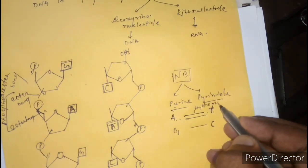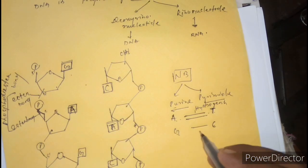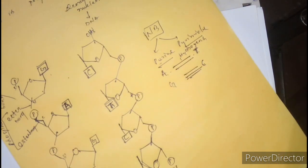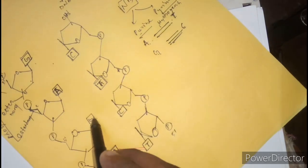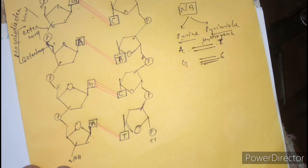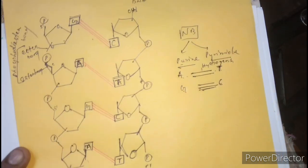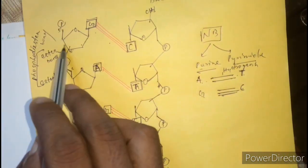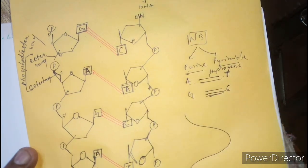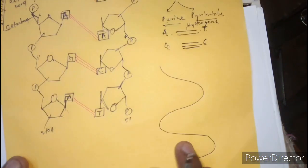Purine always pairs with pyrimidine: adenine always pairs with thymine, and guanine always pairs with cytosine. In between adenine and thymine there is a double hydrogen bond, and in between guanine and cytosine there is a triple hydrogen bond. Let's connect adenine with thymine and guanine with cytosine with a triple bond.